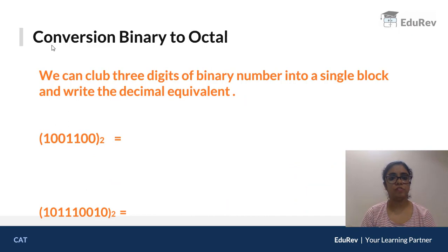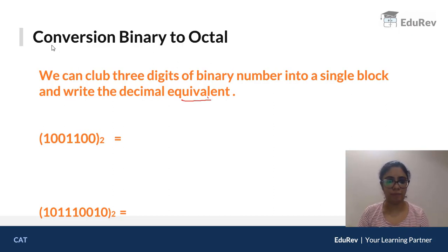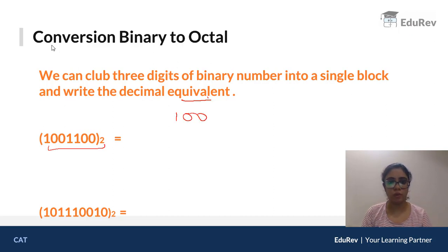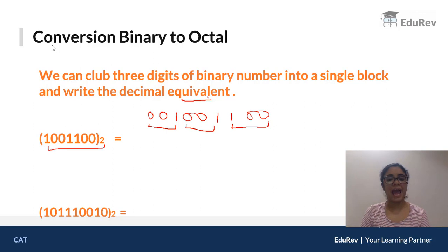Now let's look at conversion from binary to octal. This process is slightly different. We club three digits of the binary number together into a single block and write the decimal equivalent of each block. Our example number is 10011000 in binary. Starting from the right, we form blocks of three: the first block, second block, and the remaining single digit gets two leading zeros added.